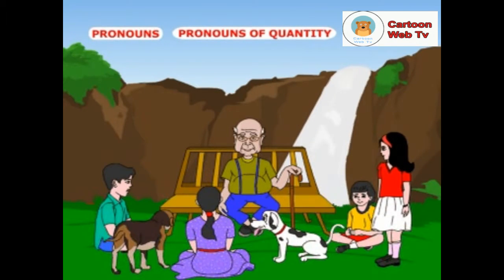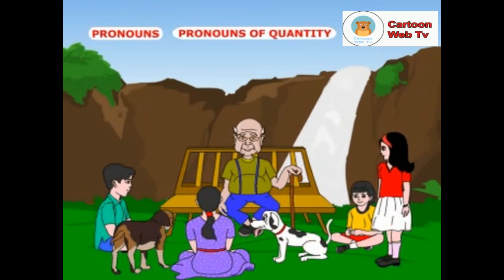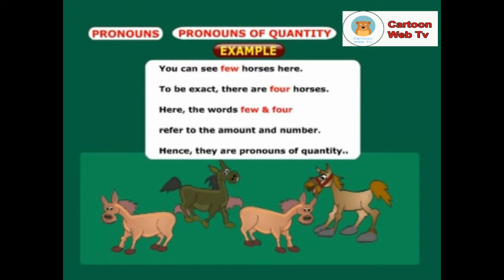Grandpa, I know about the pronouns of quantity which refer to amount or numbers. For example, look at the following sentences: you can see few horses here. To be exact, there are four horses. Here, the words few and four refer to the amount and number. Hence, they are pronouns of quantity.